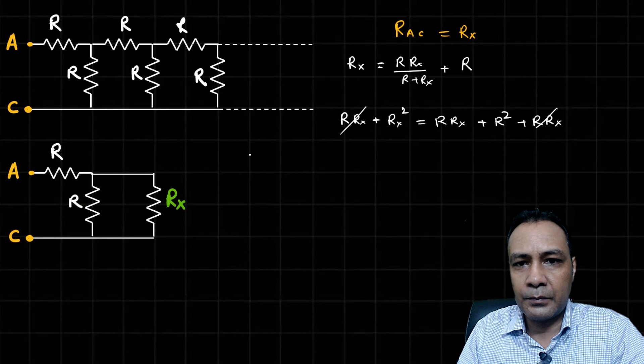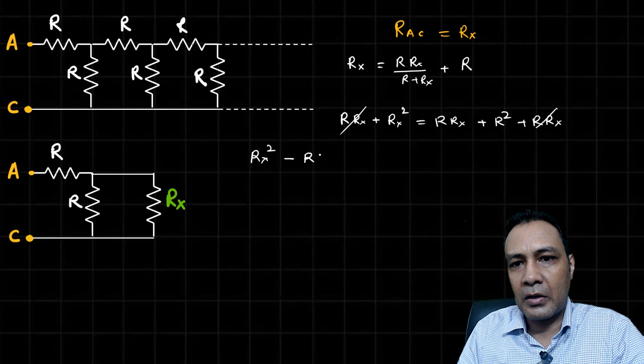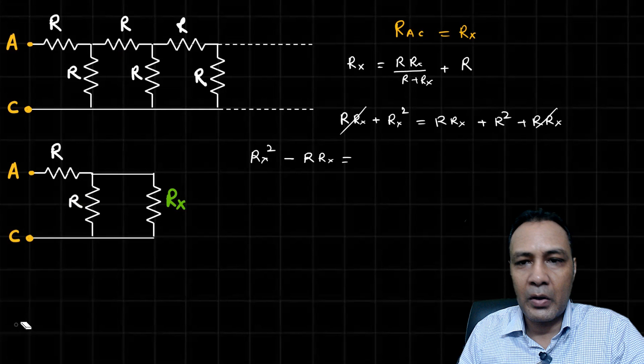Now R times R_X will get cancelled. So R_X squared minus R times R_X minus R squared equals zero.